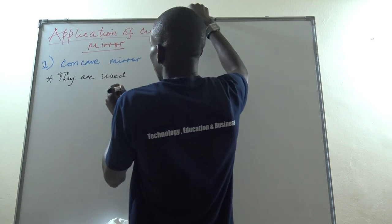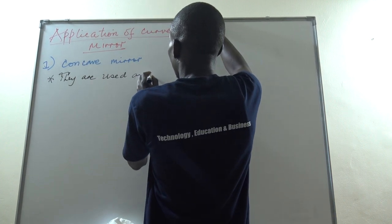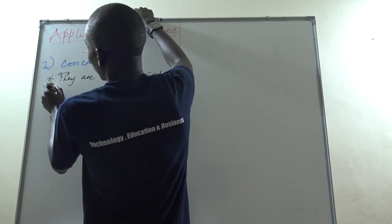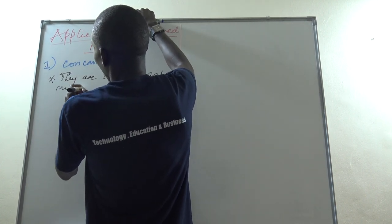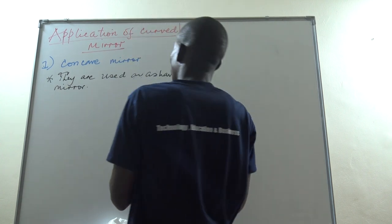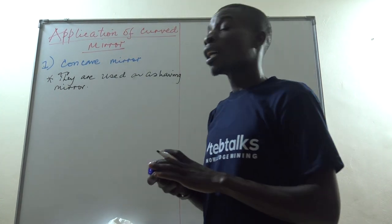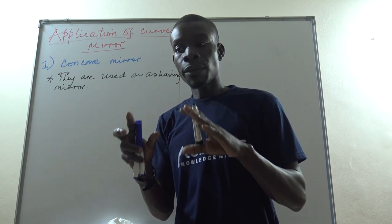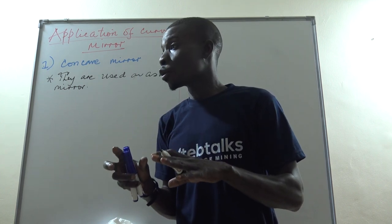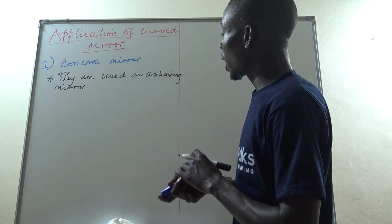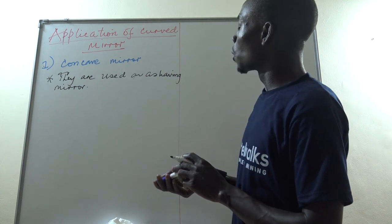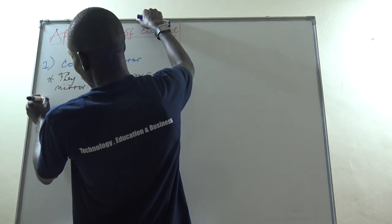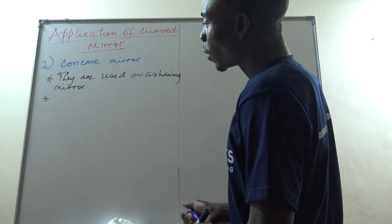First, concave mirrors are used as a shaving mirror. We have already seen that in the concave mirror they form an erect image in some scenarios where the object is placed very close, so they can be used as a shaving mirror.